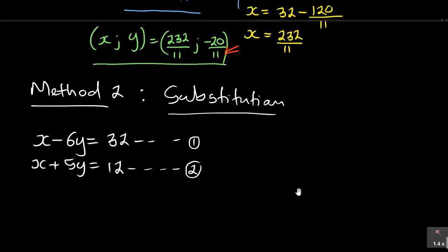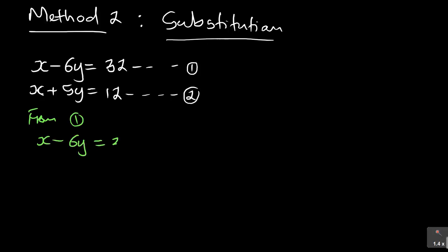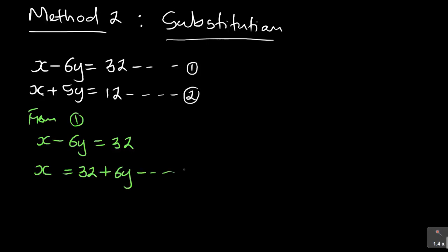With the substitution method, we choose the equation that makes it easier to isolate x or y. Looking at equation 1, x is already on its own side. From equation 1: x minus 6y equals 32. I take the negative 6y to join 32 — when it crosses the equal sign, it changes sign — giving x equals 32 plus 6y. This becomes equation 3.